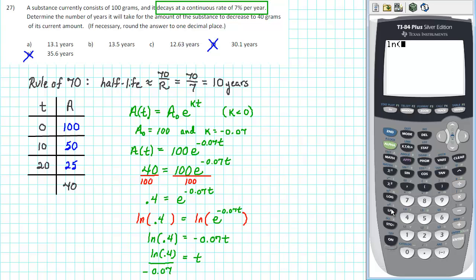Find the natural logarithm of 0.4 divided by negative 0.07. And it comes out to be 13.1. So t is equal to 13.1 years which is between 10 and 20 years like we anticipated. The correct answer is A.